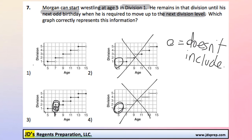But it specifically says that on his next odd birthday, he is required to move up to the next division level. Meaning, he can't be there anymore. And that's why option number 1 makes the most sense.